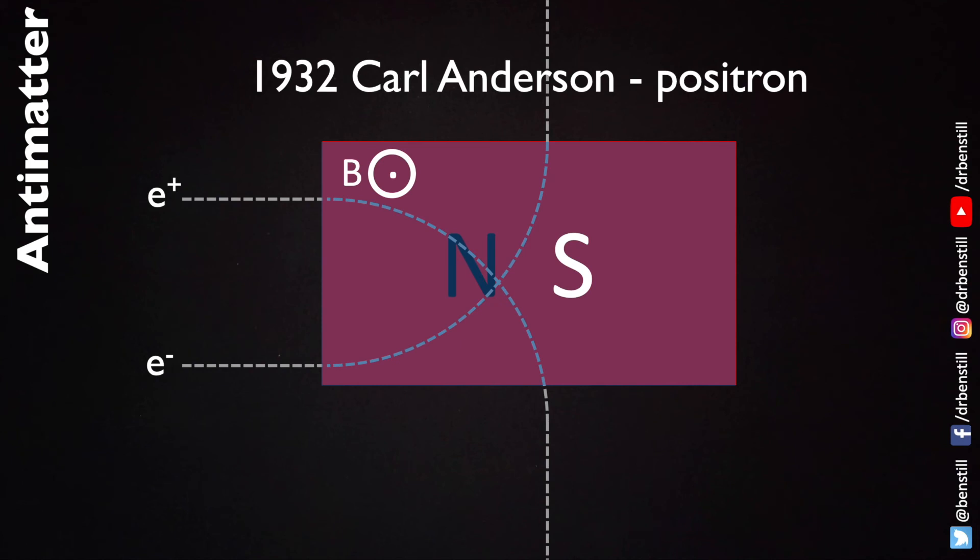Now the positron is really the only anti-matter particle with its own unique name because it was the first anti-matter particle to be discovered. All other fundamental particles just have the prefix anti put in front of them. So the anti-up quark, the anti-down quark and the anti-neutrino for instance.